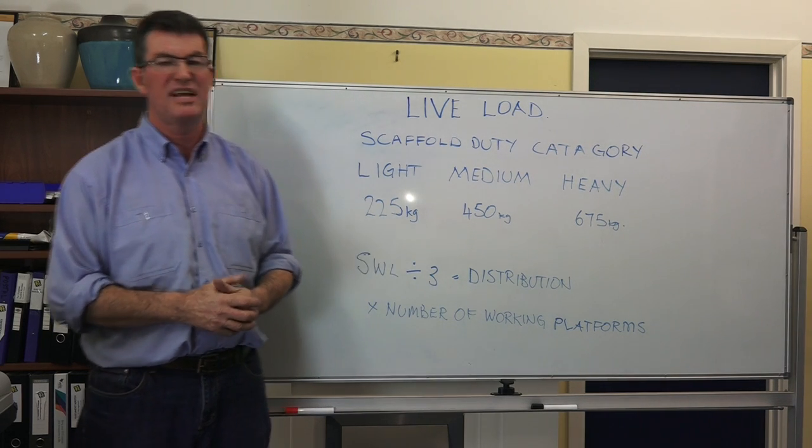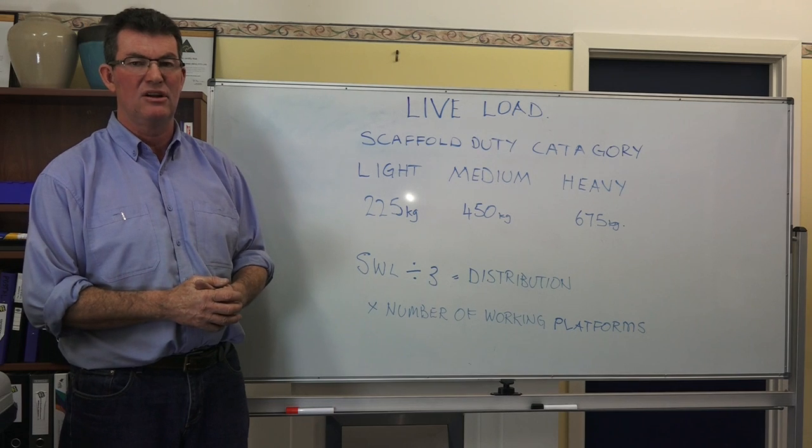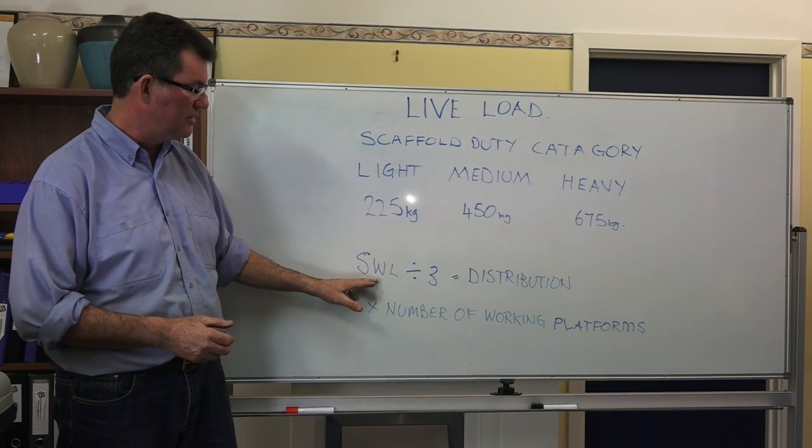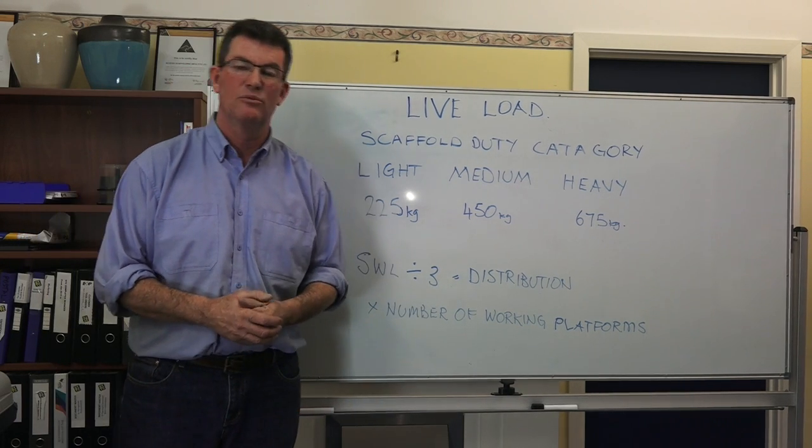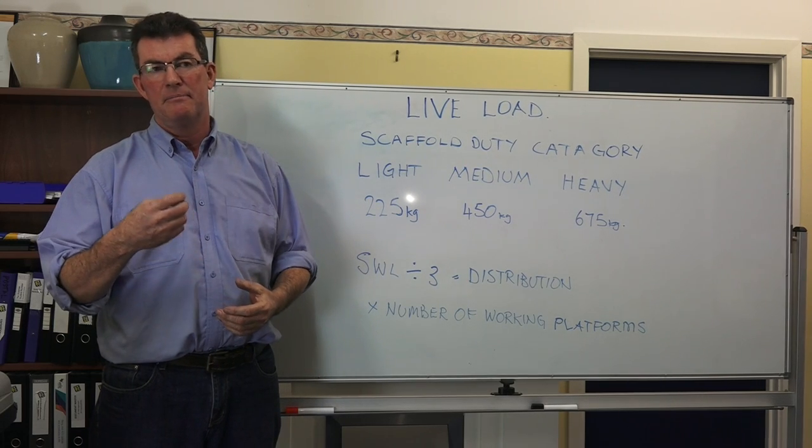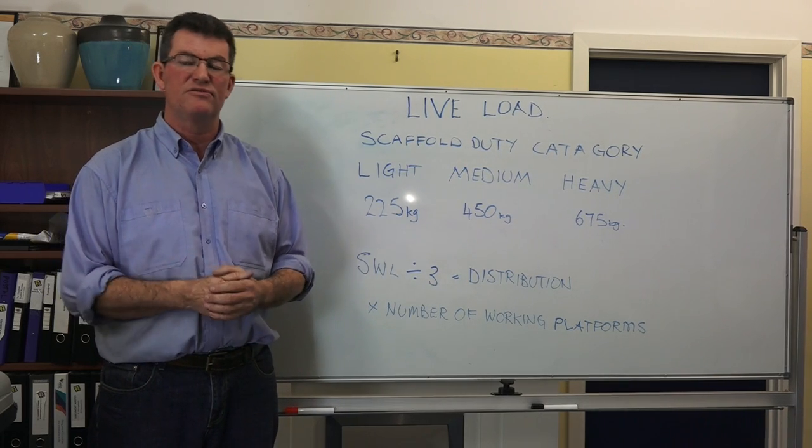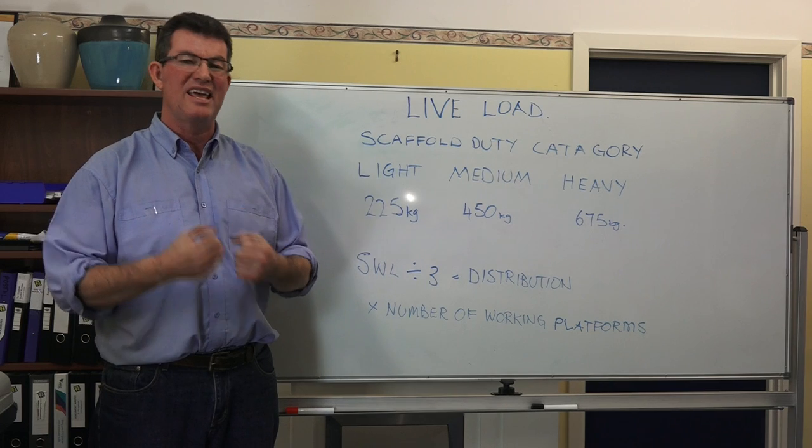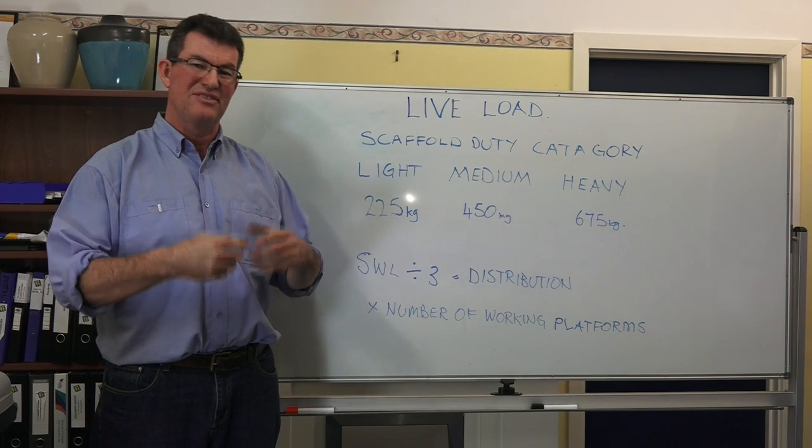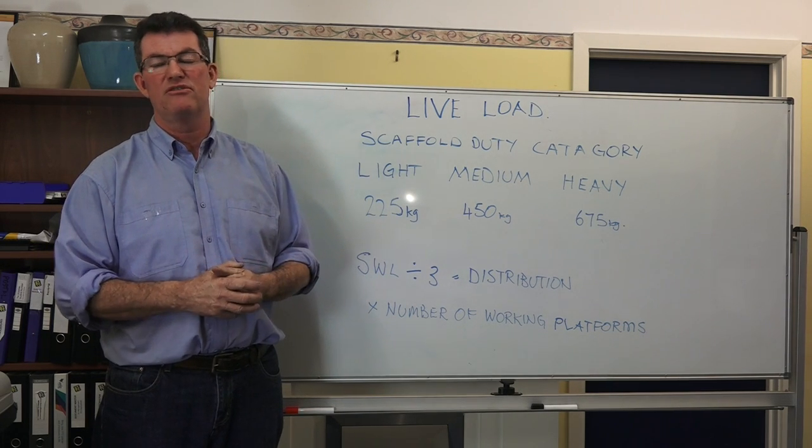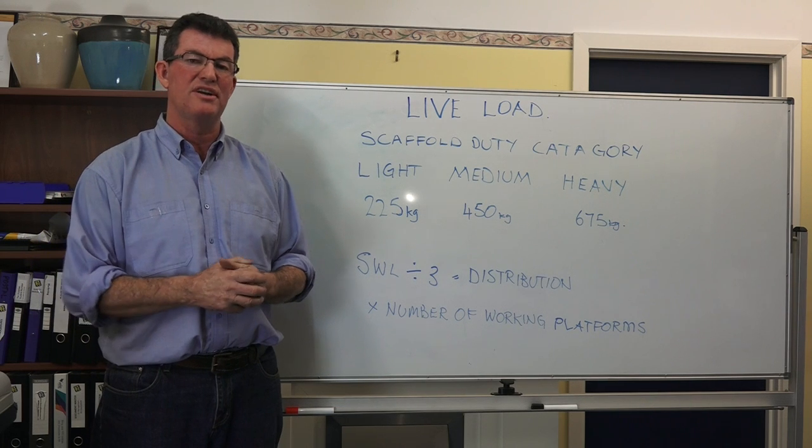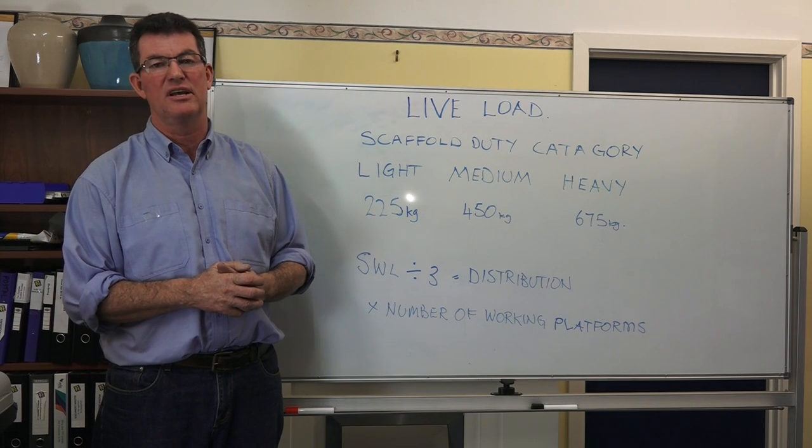So we have to know what the safe working load of the scaffold is before we can calculate the live load. We then take the safe working load and divide it by three. We divide it by three because the load on the scaffold is fluid, it moves around so it's not an even distribution. The standard is also designed to carry one third of the safe working load.